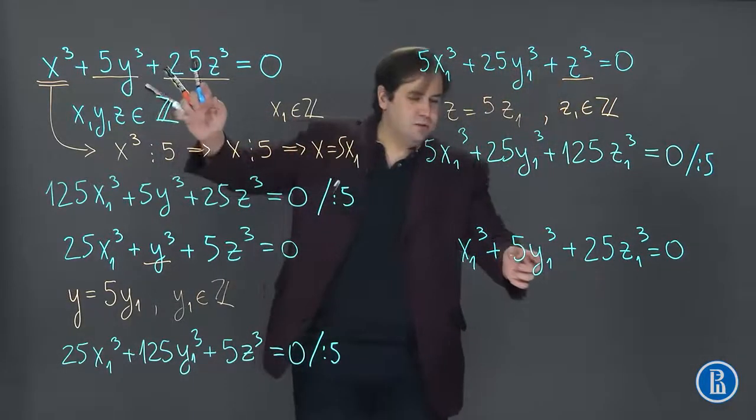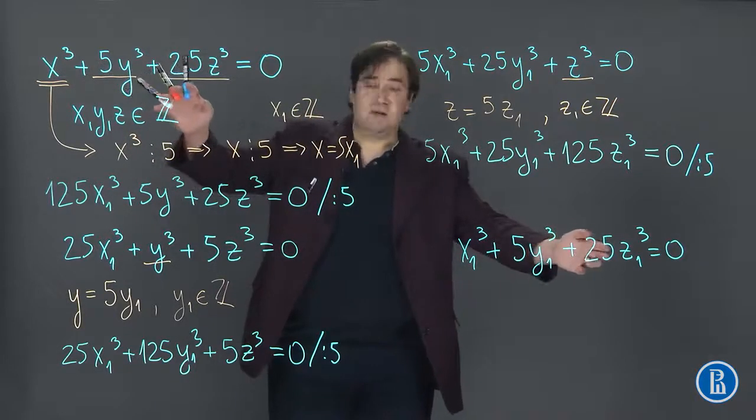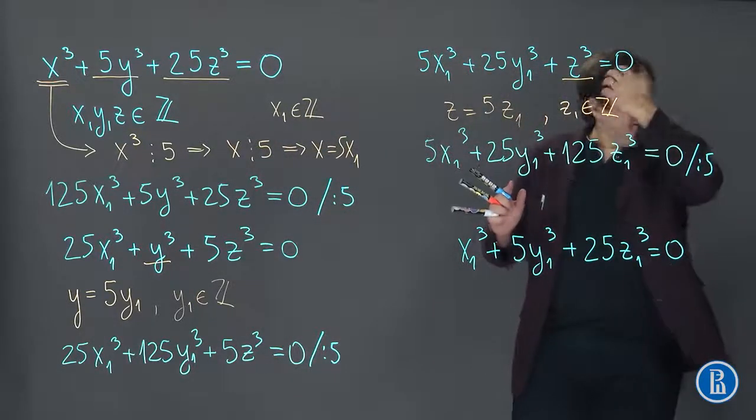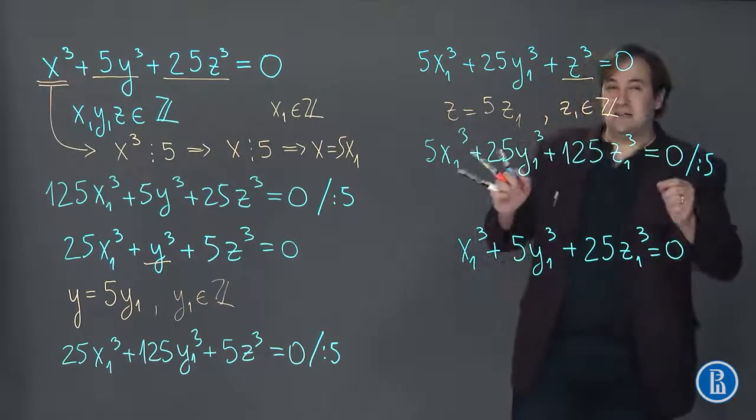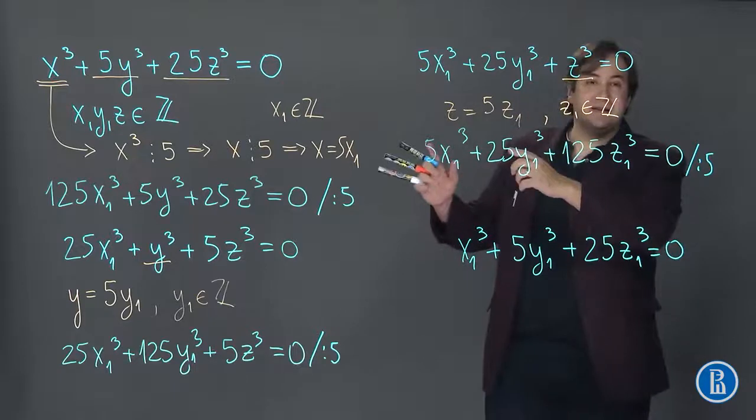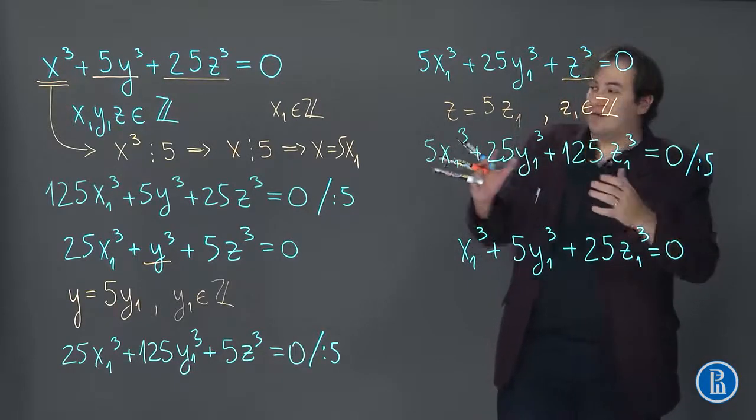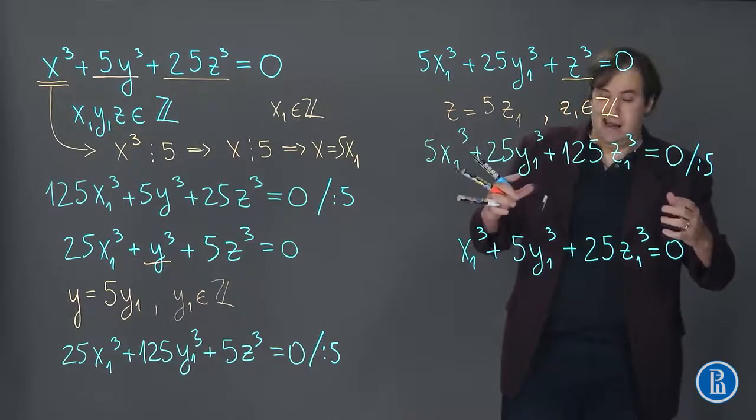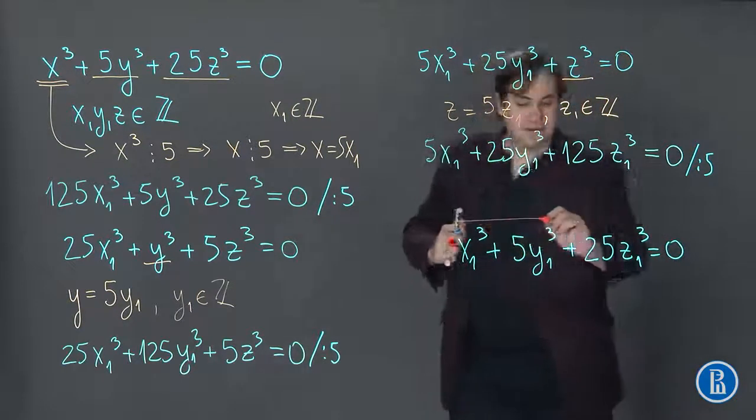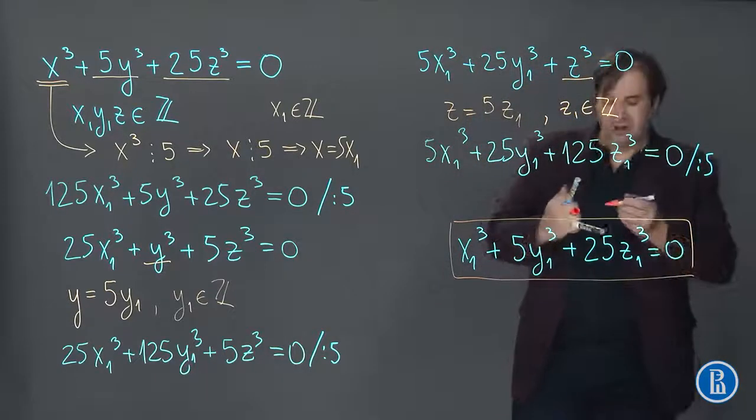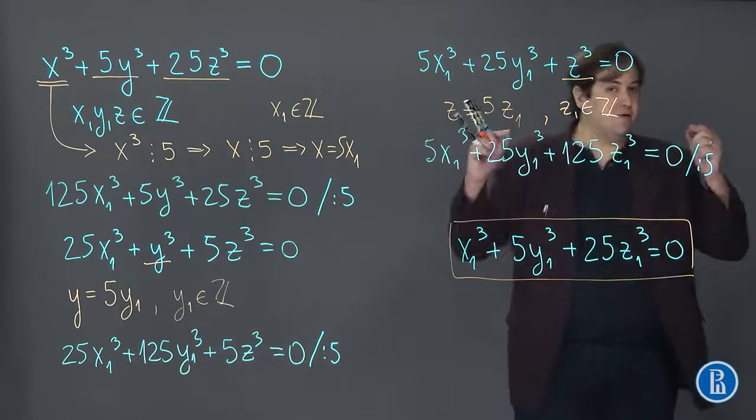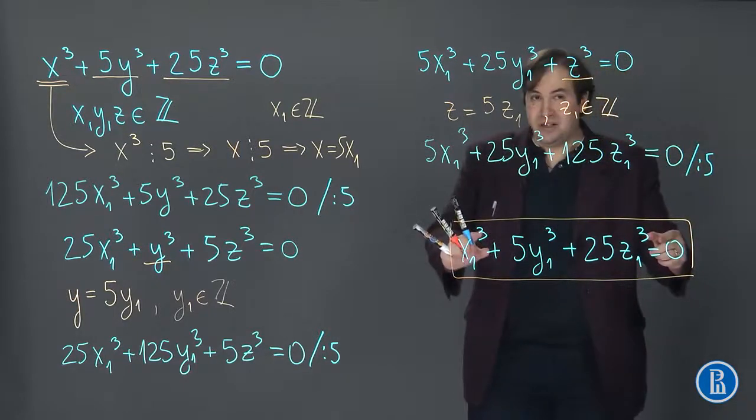Now the 4th equation is x₁³ plus 5y₁³ plus 25z₁³ equal to 0. This equation is the same as the initial one. The only difference is that unknowns variables in this equation each of them is five times less than the values of variables in the initial equation. So we divided all the variables by five and they are still integer and they satisfy the same equation.